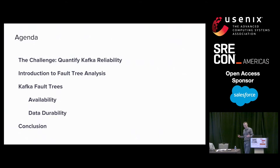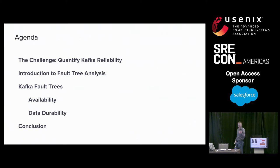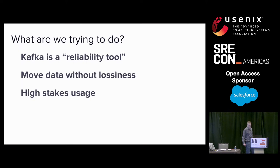I'll begin this talk by first talking about why Kafka is important, what we want to quantify about it, and why. After that, I will introduce fault tree analysis and give you a tutorial on how to apply it. We'll then take those basics and apply it to the meat of the talk, which is drawing fault trees for Kafka in order to determine the availability SLO and data durability SLO. Finally, I'll conclude with some references, takeaways, as well as thoughts for the future.